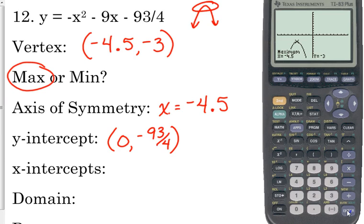Now, x-intercepts. Does this function ever cross the x-axis? No, it doesn't. So this is an example of one that doesn't have any x-intercepts. You just write none.